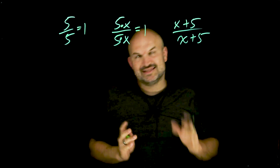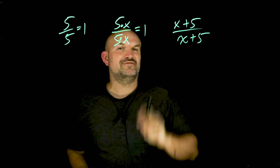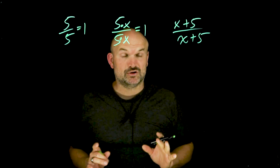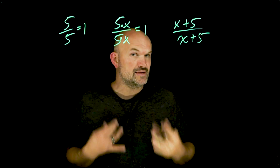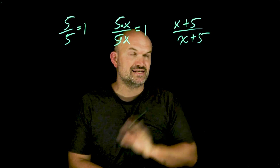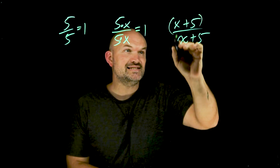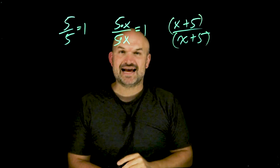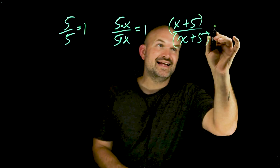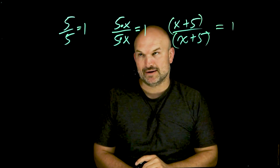Sometimes students will get this confused because the X and the five are not separated by multiplication — they're separated by addition. You cannot apply the division property across addition or subtraction. But in this case, since these are actually the exact same expressions, the answer is still going to be one.